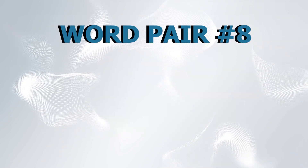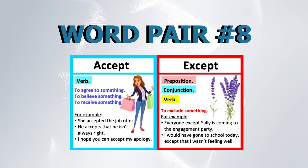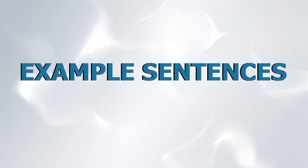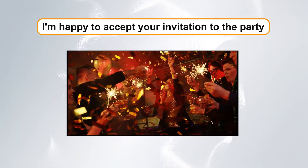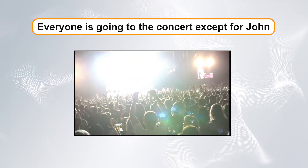Word pair number eight: accept versus except. Our eighth word pair is accept and except. Accept means to receive or agree to something, while except is a preposition that means excluding or not including something. Example sentences: One, I'm happy to accept your invitation to the party. Two, everyone is going to the concert except for John.